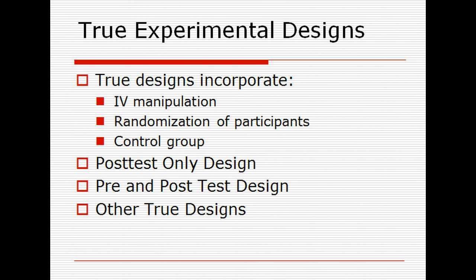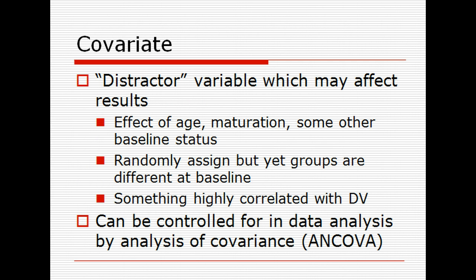We'll go through different designs — post-test designs, pre- and post-tests, and other types. As mentioned, a covariate is a distractor variable that can affect the results. If you are looking at something like age, maturation, body mass index, or body weight, sometimes you can take that out of the analysis. In large-scale studies, they will sometimes remove things like BMI, smoking status, and age as covariates.